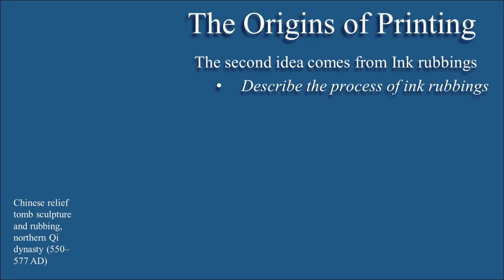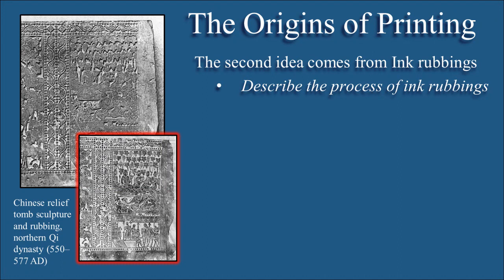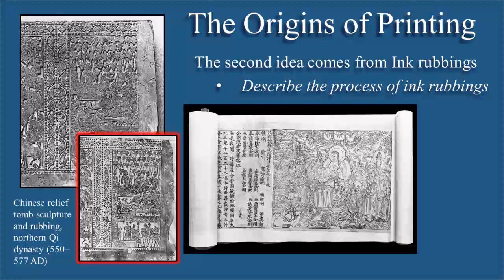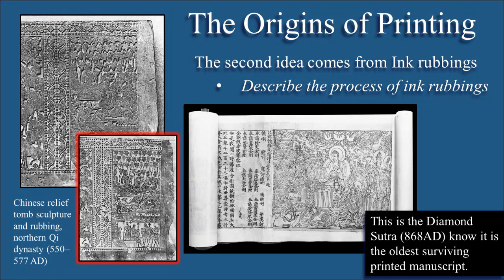The second theory around the origins of printing focuses on the early Chinese practice of making inked rubbings from inscriptions carved in stone. Here's an example of a Chinese relief tomb sculpture and the rubbing on the piece of paper. And here is another example of a Chinese ink rubbing — this is the Diamond Sutra from 868 AD. What I want you to know is that this is the oldest surviving printed manuscript. The high quality of the printing of this Diamond Sutra suggests that the craft of printing had progressed to an excellent level by the time this manuscript was produced. I want you to be able to describe the process of ink rubbings and how it was accomplished.